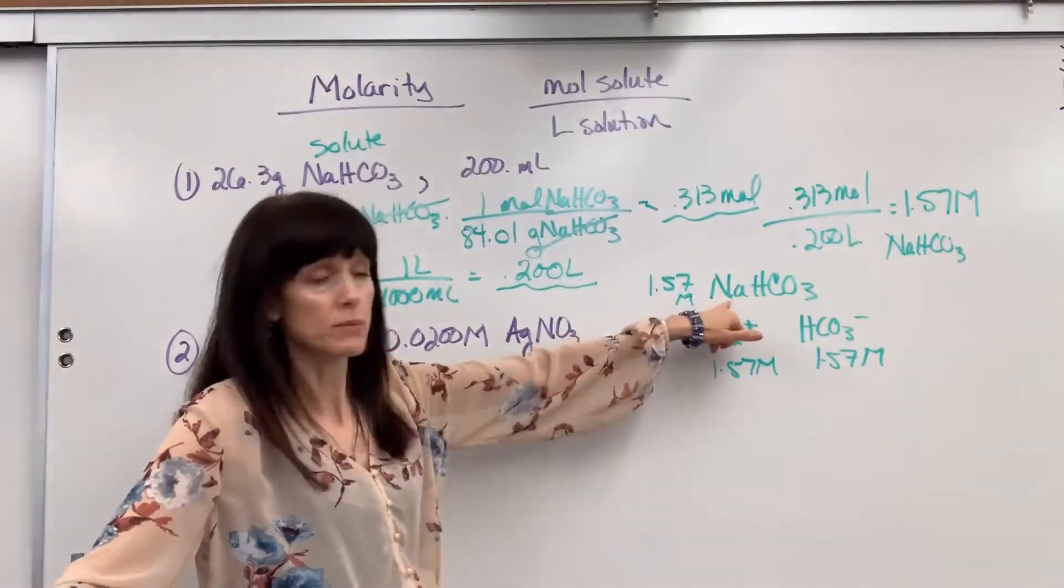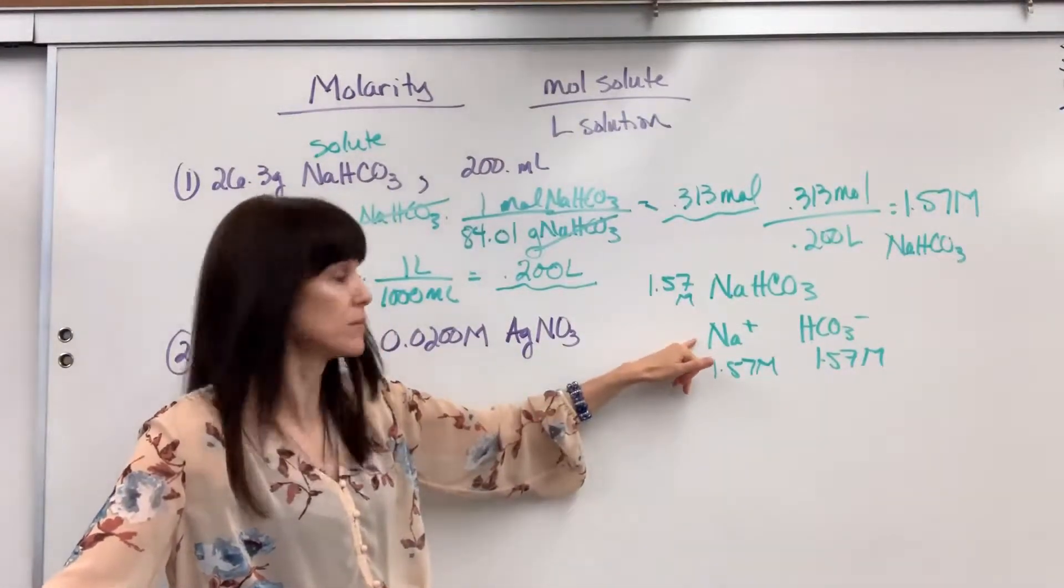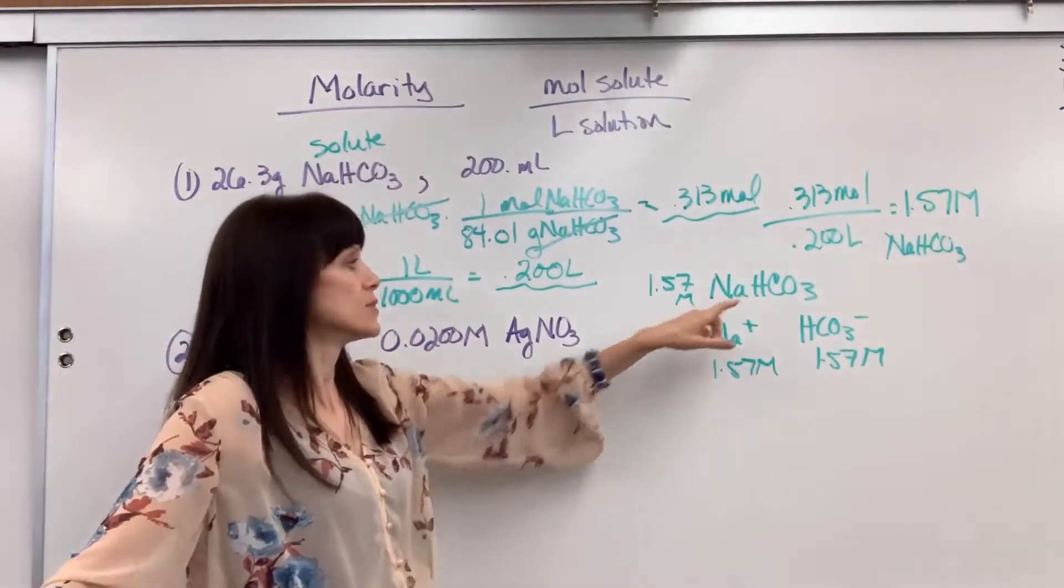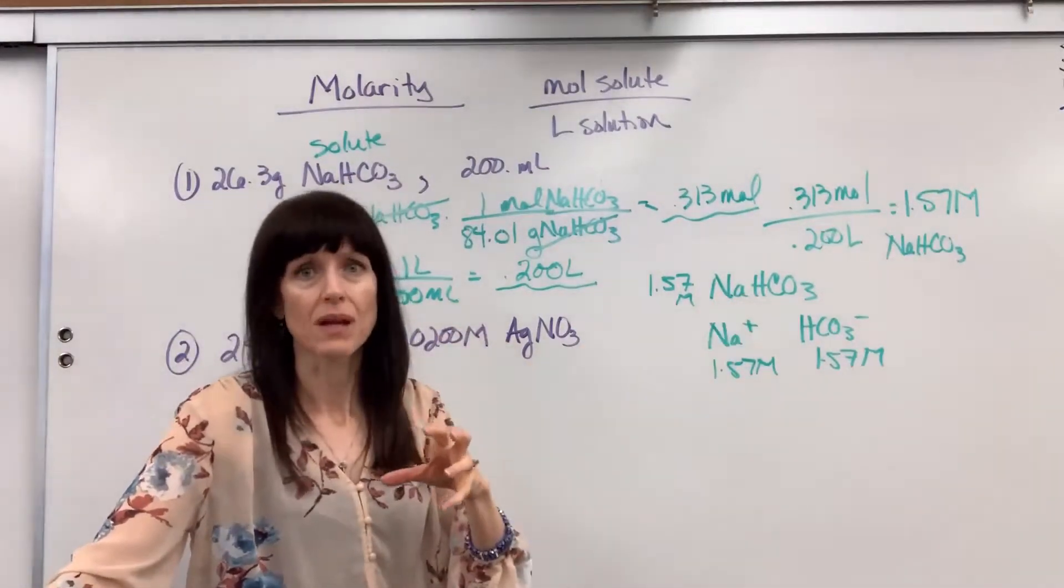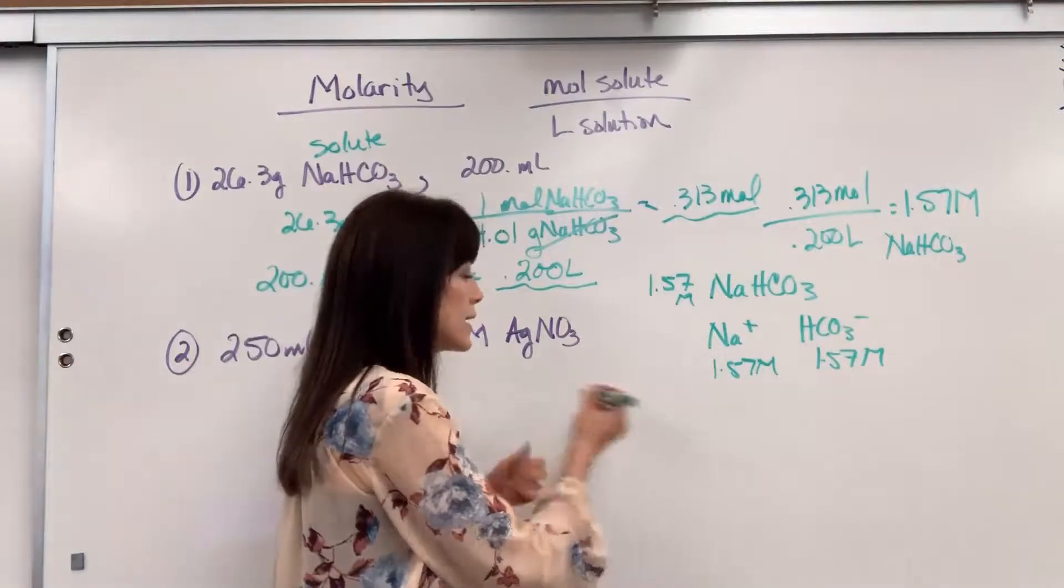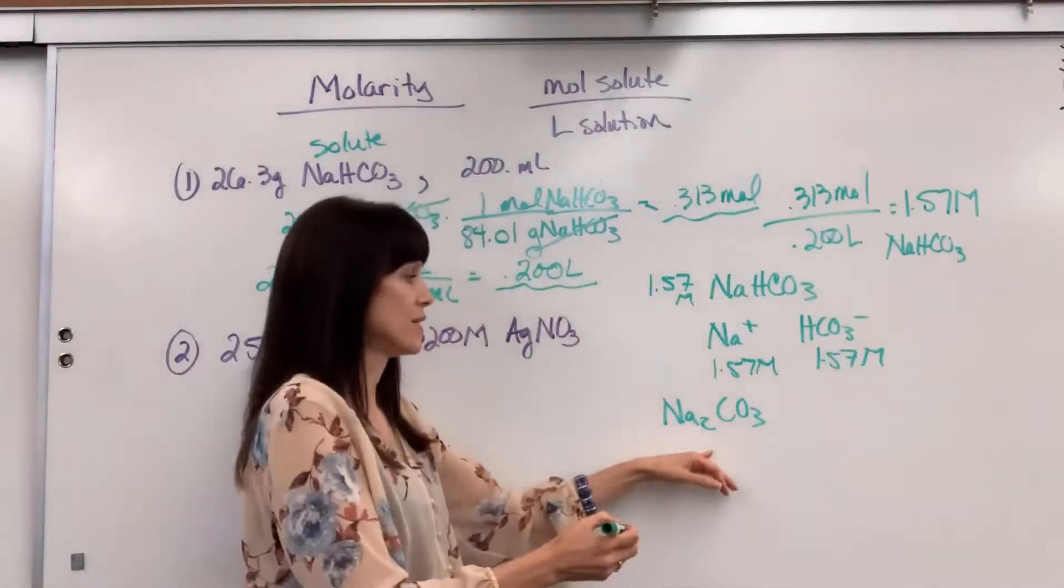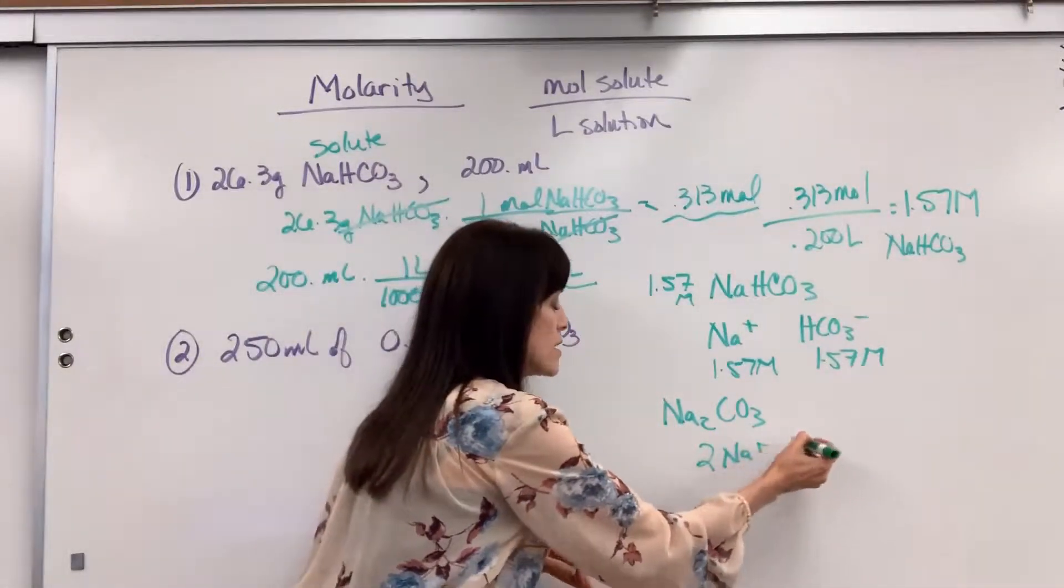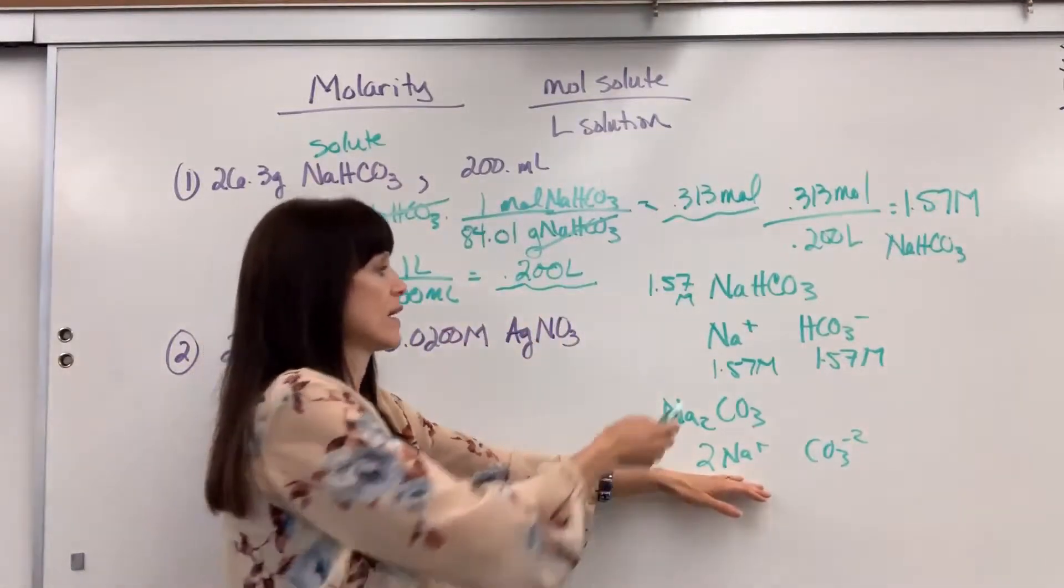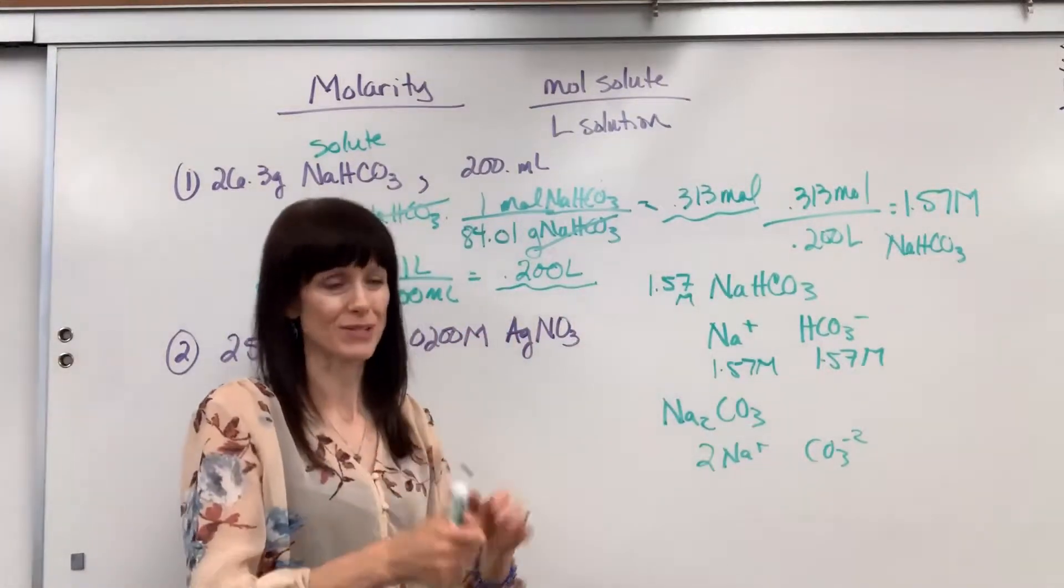Now, if this has been a subscript two, for every one mole of this, I would have twice the number of sodium. That means that this would be doubled to 3.14 molar. So you just look at the subscript and that's going to be the ratio with the moles inside that compound. For example, if we had sodium carbonate like that, you would have two sodium ions for every one carbonate. So in that case, if I had 1.57 of this, that's when I'd have double the sodium ion. So there's a follow-up question that you could be asked.